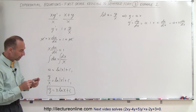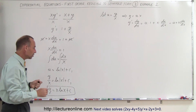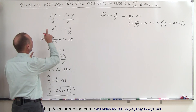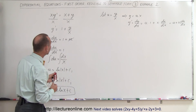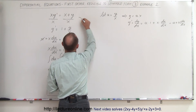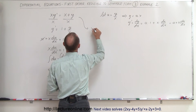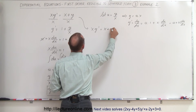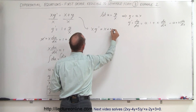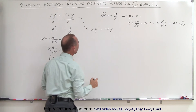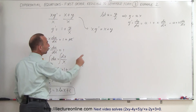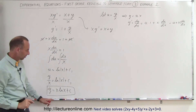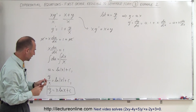Now we ask: how do we know we're correct? One thing we can do is substitute this back in the original equation and see what we get. The original equation was x times y prime is equal to x plus y. We're going to substitute for y prime the derivative of our solution.